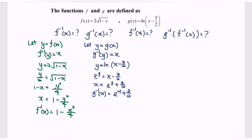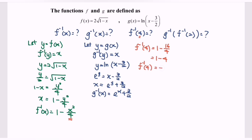Next, find f inverse for the value 4. Substitute the value 4 into f inverse: f inverse of 4 equals 1 minus 4 squared over 4, which is 1 minus 16 over 4, giving 1 minus 4. So f inverse of 4 is equal to negative 3.